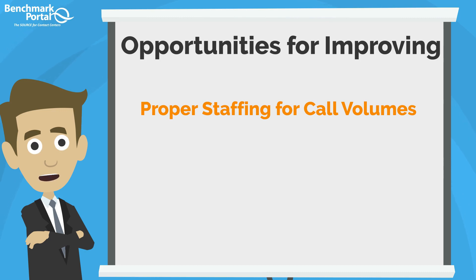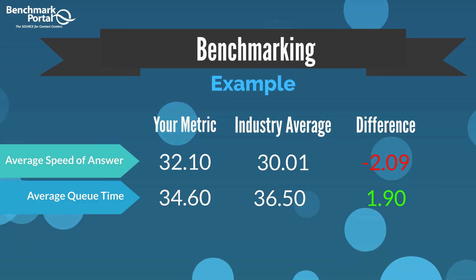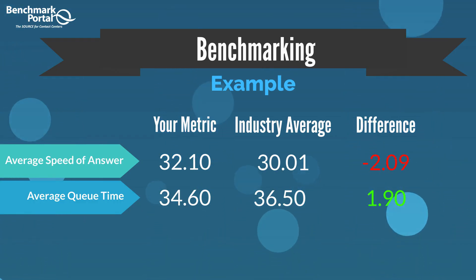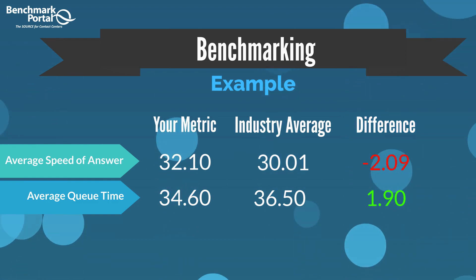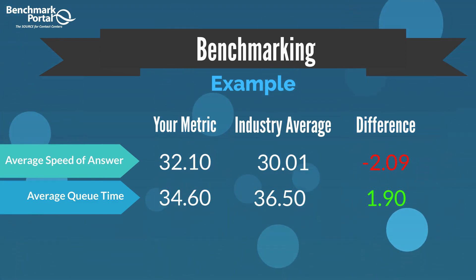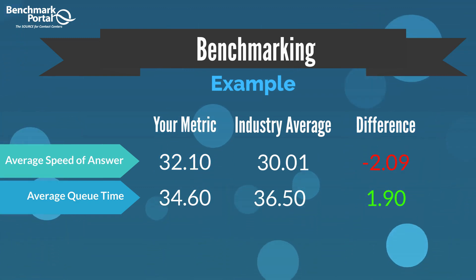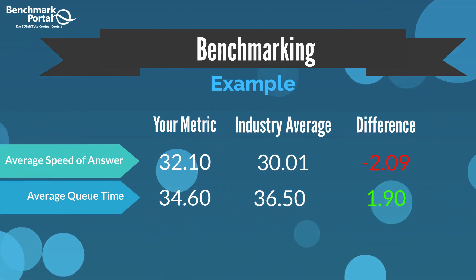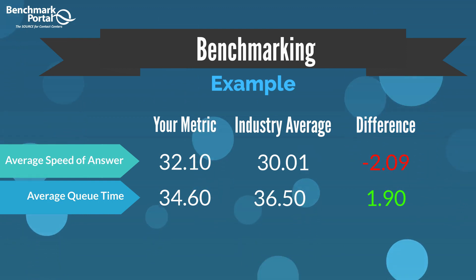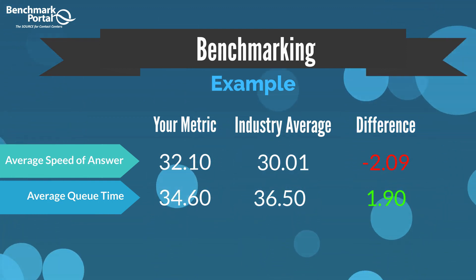Ensure your center is properly staffed to handle call volume by working closely with your workforce management team to ensure that your planned and actual performance are meeting your center's ASA and queue time goals. Comparing these metrics to your competitive peers through industry benchmarking is important to determine whether the accessibility of your operations is in line with industry standards. If you find you need to improve these metrics, look for areas to improve.